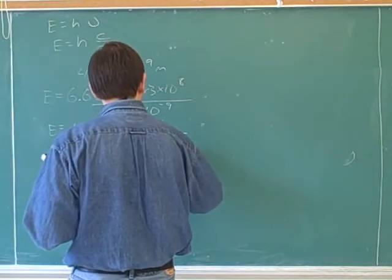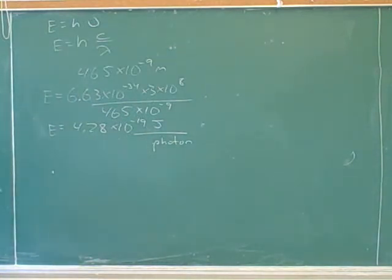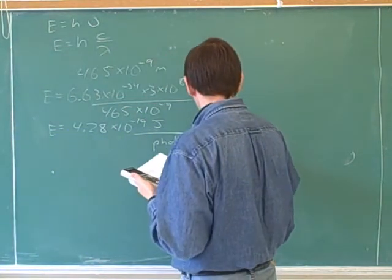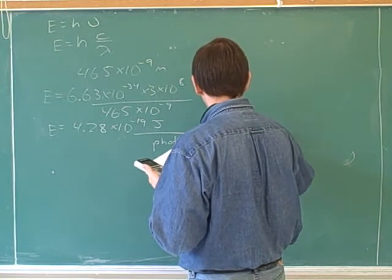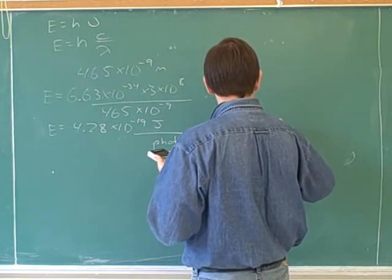And then you know there's 6.02 times 10 to the 23rd photons in one mole.